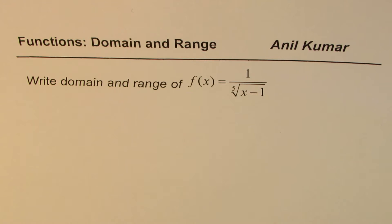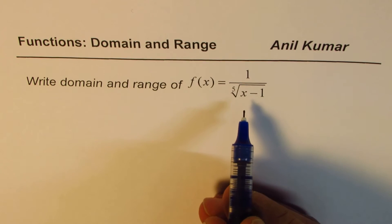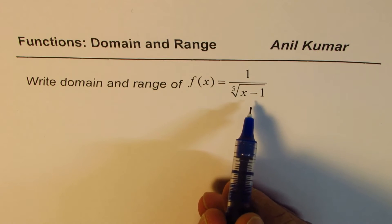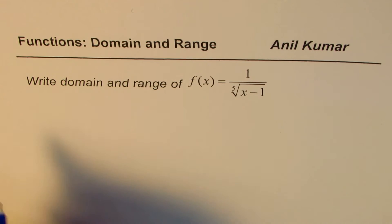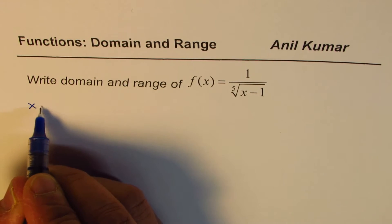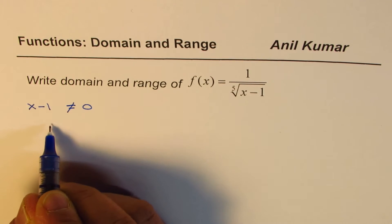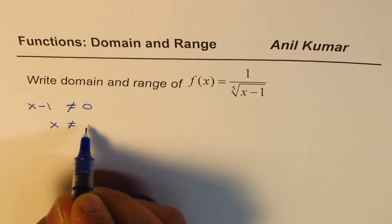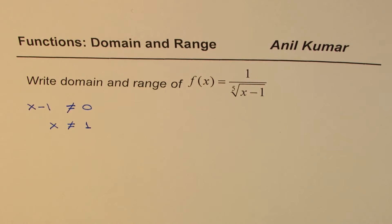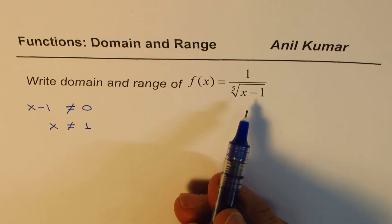Now whenever you have an algebraic function as given here, we know that denominator cannot be 0. So that gives restrictions. In the denominator, we have x minus 1. If I equate that not to be 0, then we get x is not equal to 1. So we get one restriction on the domain of the function.